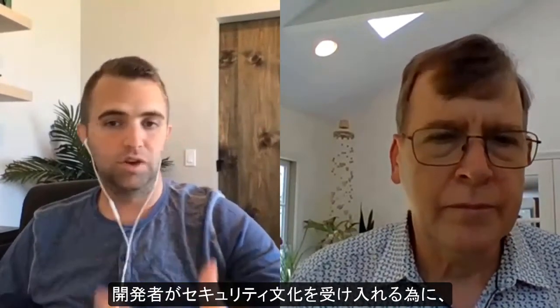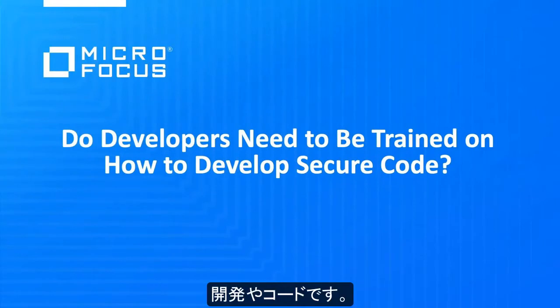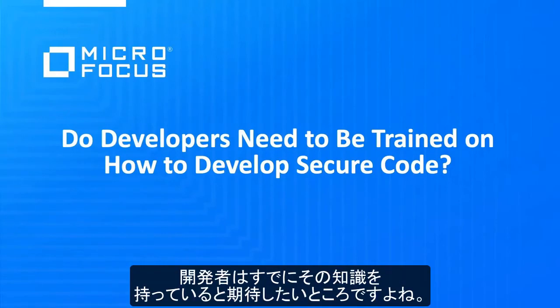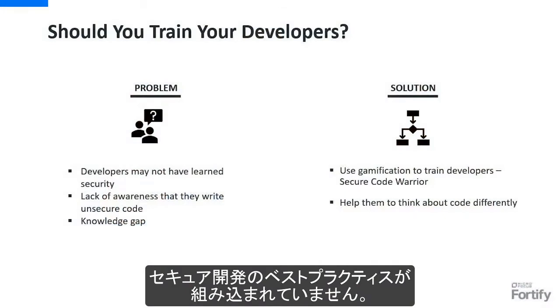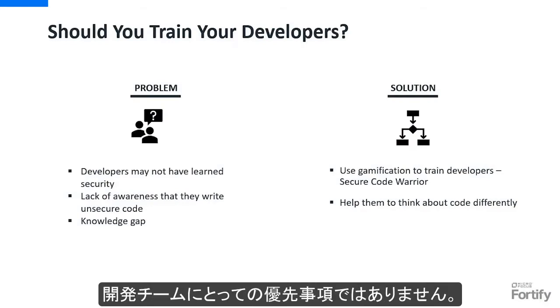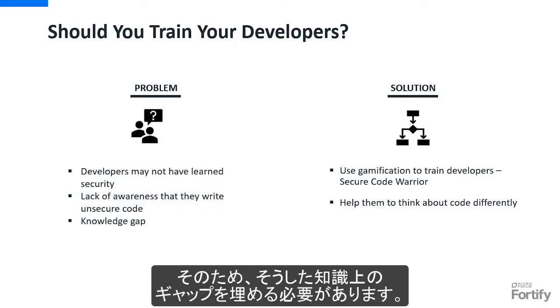Do developers really need to be trained on how to embrace a security culture? They're focused on development, focused on their code — do they need to be trained on how to develop secure code? Well, you would like to hope that they already know how, that they got taught that in college or picked it up along their career. But you can't make that assumption, and they may not really understand that what they're producing is inherently insecure. Secure development best practices are not embedded in most computer science programs, and it's not a priority many times for development teams to embed that awareness into their developers. So you have to help close that knowledge gap.